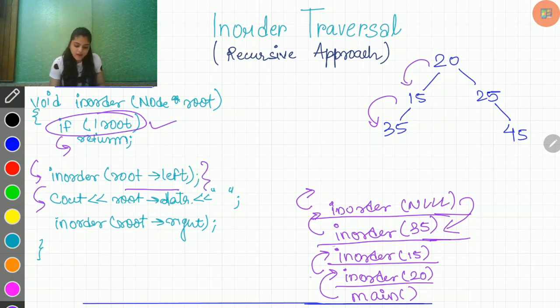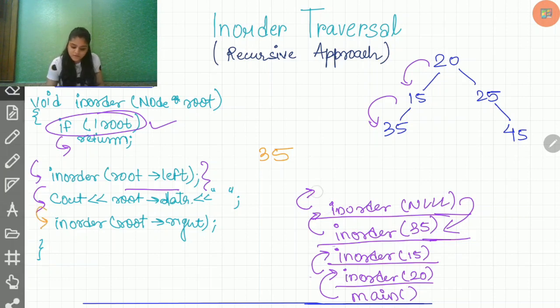Now here, as it says, cout root.data. So this will just print my data, which is 35 and we'll go on to the next line. The next line is in-order root.right. So now this was, this has done its part. So this will be eliminated from the stack.